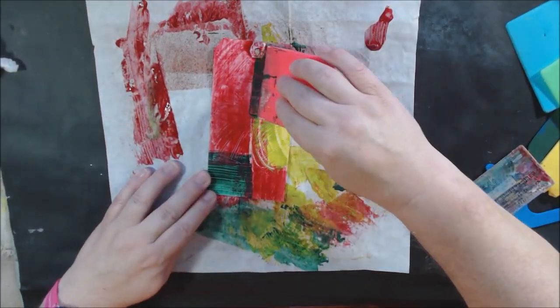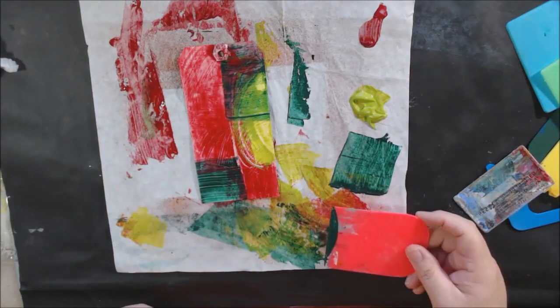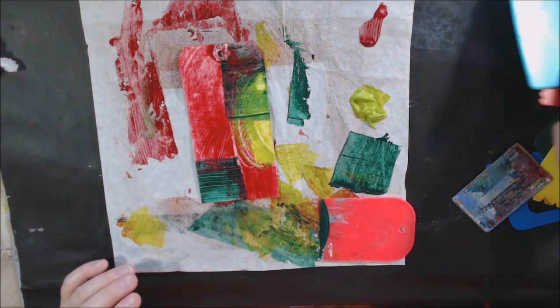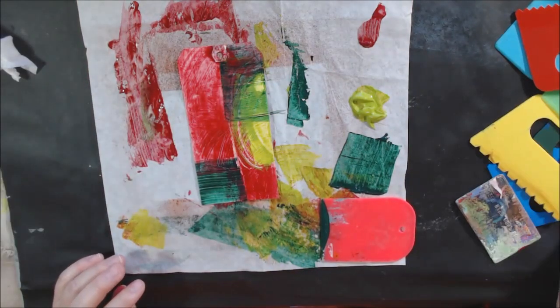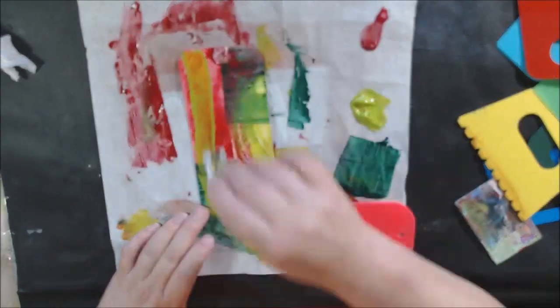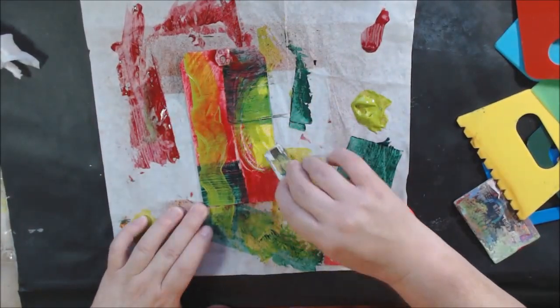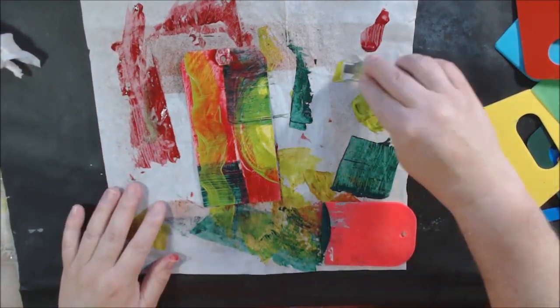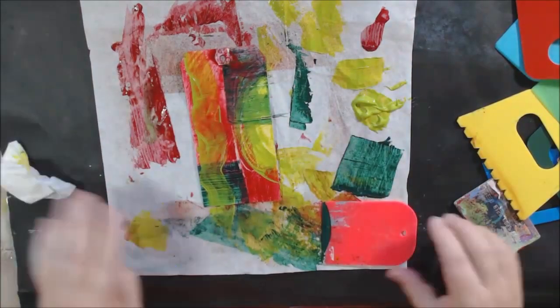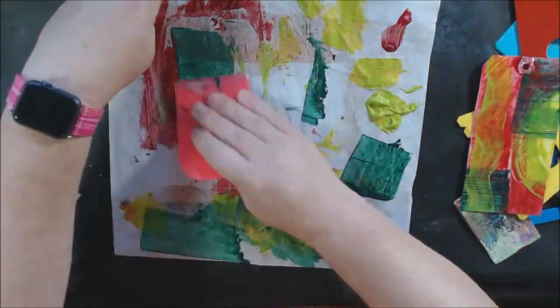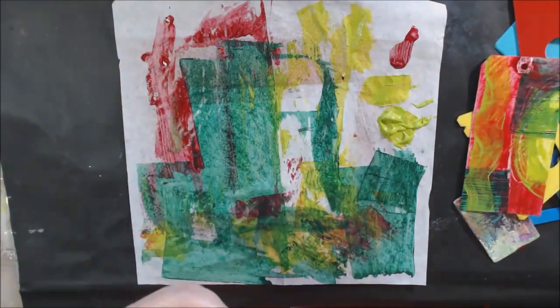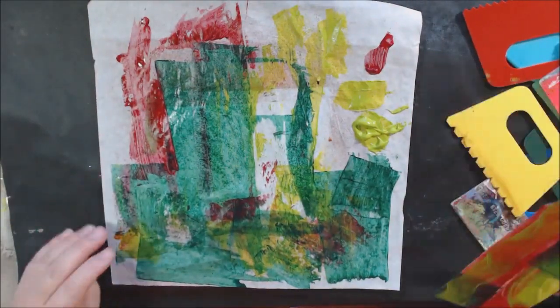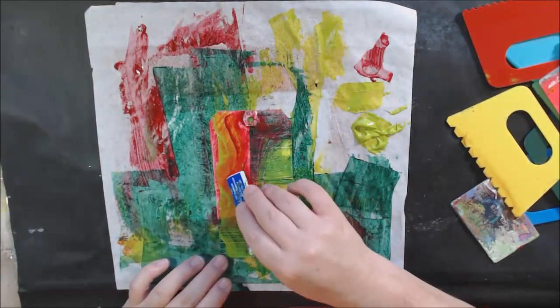Then I looked on my color wheel and decided to do a split complementary using light olive green and deep green permanent. This is a blue green and a yellow green. If you look at red, straight across is its complementary color green, and then I'm using the greens on the sides—the yellow green and the blue green.